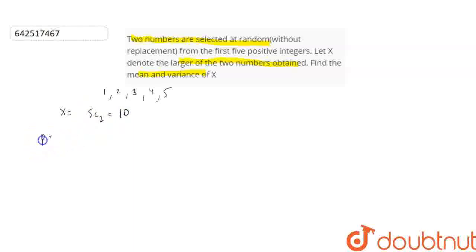So, probability of X equals 2 is 1 by 10. Now, probability of X equals 3 will be 1,3 or 2,3. There are two favourable outcomes, that gives 2 upon 10.